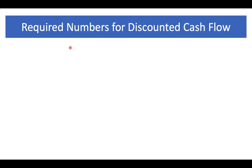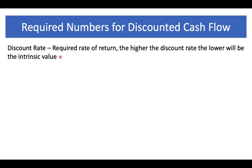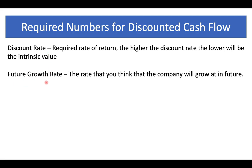To start, the required inputs for discounted cash flow: number one is the discount rate. Briefly, it is the required rate of return. The higher the discount rate, the lower the intrinsic value will be, so the more conservative you will be. You should always have a discount rate higher than the risk-free rate — for example, the rate given by US Treasury bonds where you're taking no risk. If you're investing in stocks you're taking risk, so you should expect a higher rate of return. I generally use 10%.